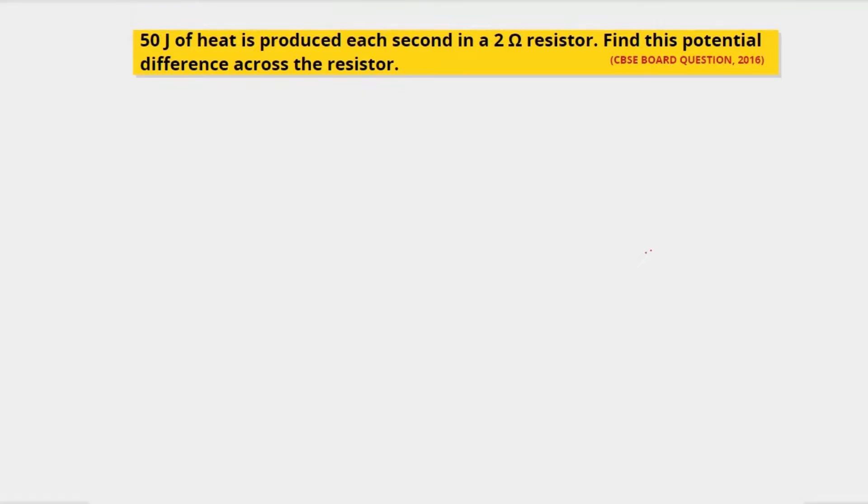Hello students, welcome back to Sigma Physics Online. Let's straightaway go to today's question. The next question is a numerical from the electricity chapter and it goes like this: 50 joules of heat is produced each second in a 2 ohm resistor.